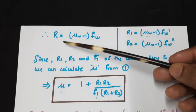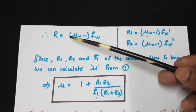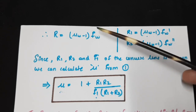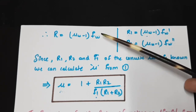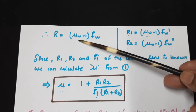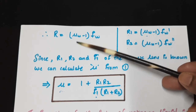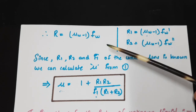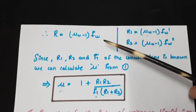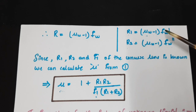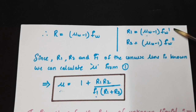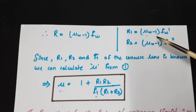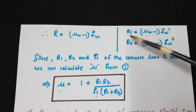Now we have got the expression for finding out the radius of curvature: R = (μw - 1)·fw, where fw is the focal length of the water lens and μw is the refractive index of water, taken as 1.33. If we want to get accurate readings, we can find out the focal lengths fw' and fw'' of water with the two surfaces of the lens interchanged, so that it will result in R1 and R2, the radii of curvature of the two surfaces of the lens.